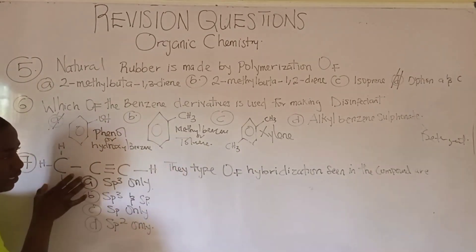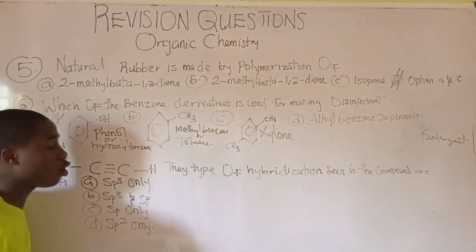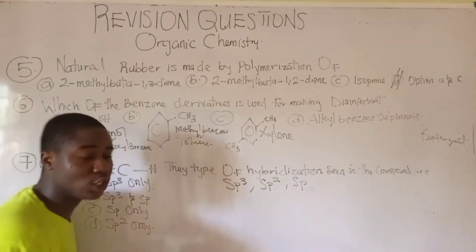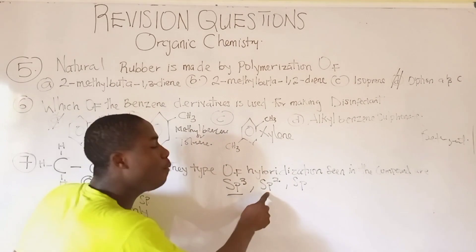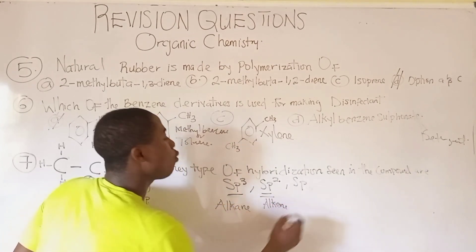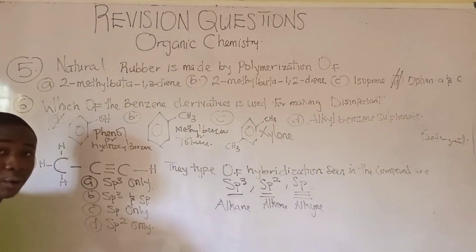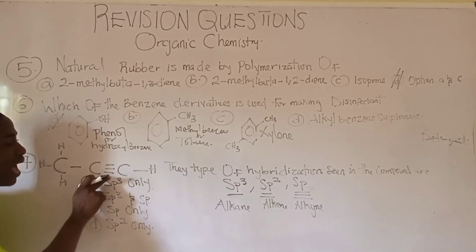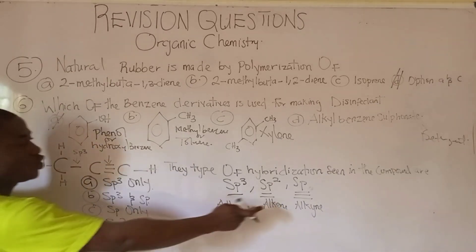Looking at question 7: the type of hybridization seen in the compound. We have three common hybridizations: sp³ (single bond, alkane), sp² (double bond, alkene), and sp (triple bond, alkyne). This compound contains only single bonds and triple bonds, so it has sp³ and sp hybridization.